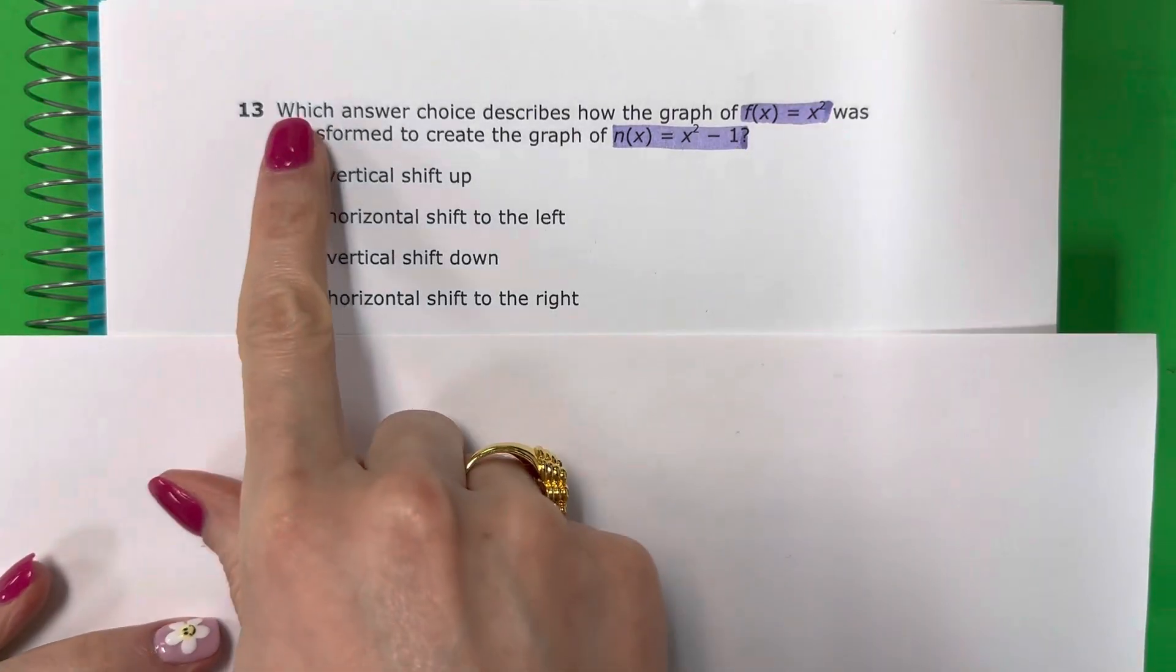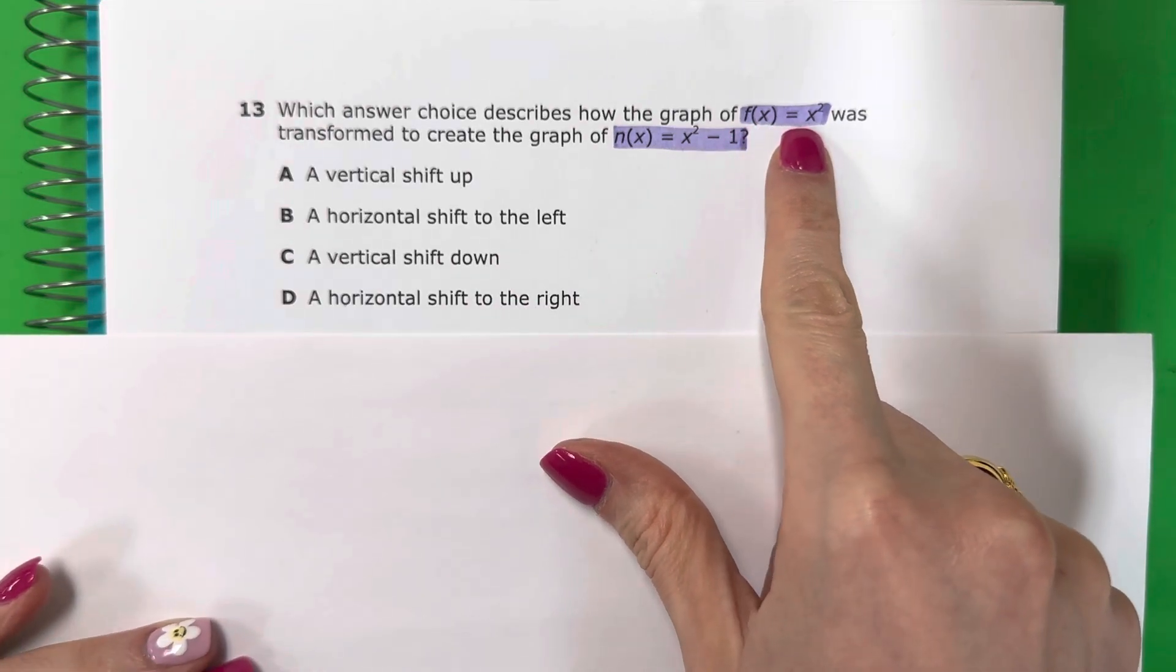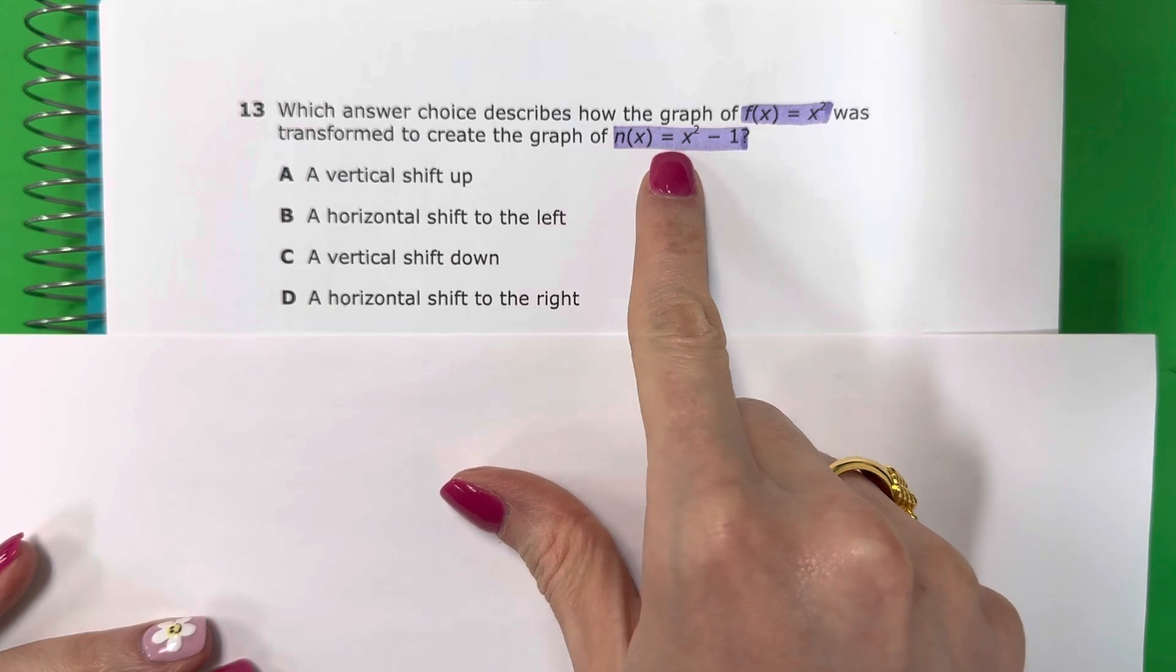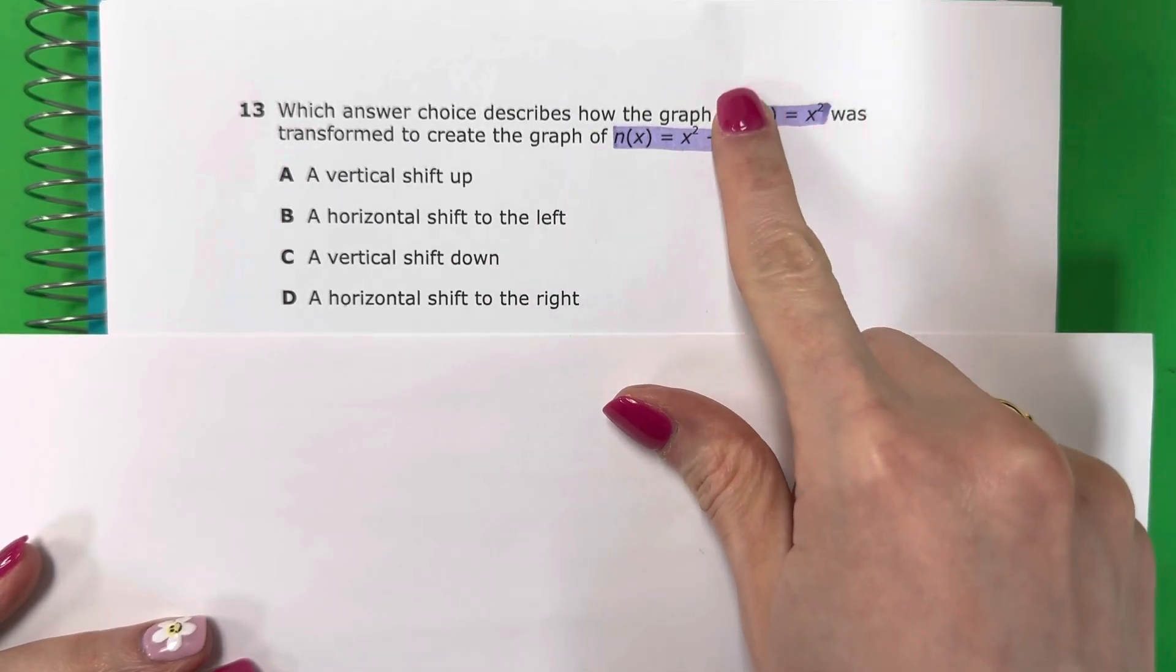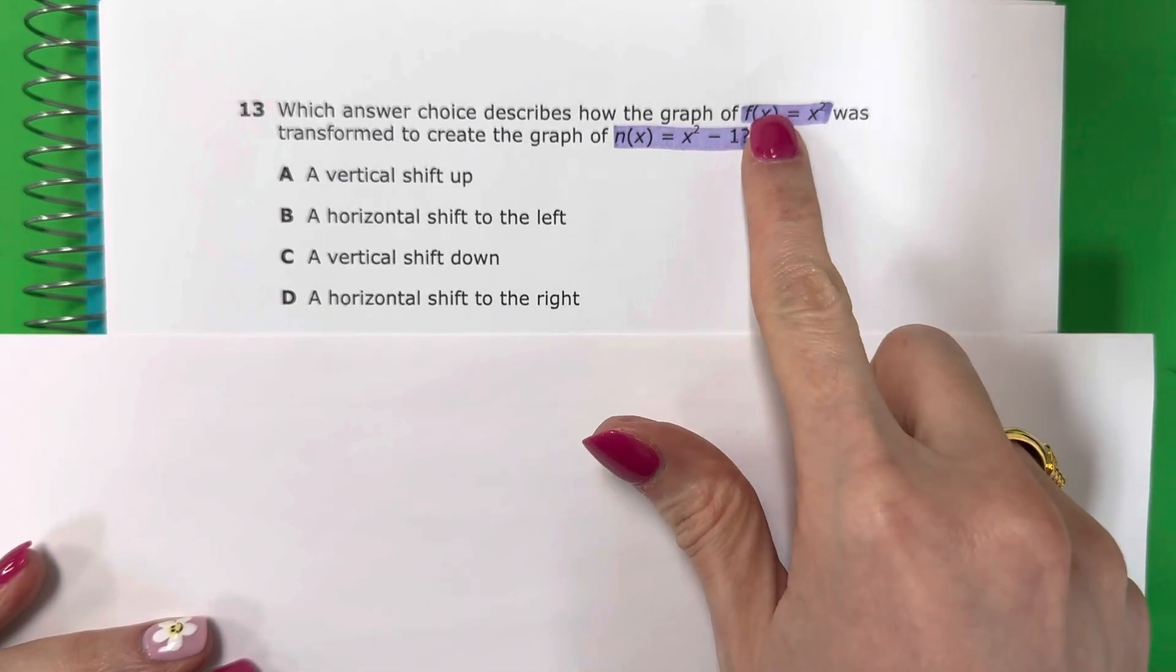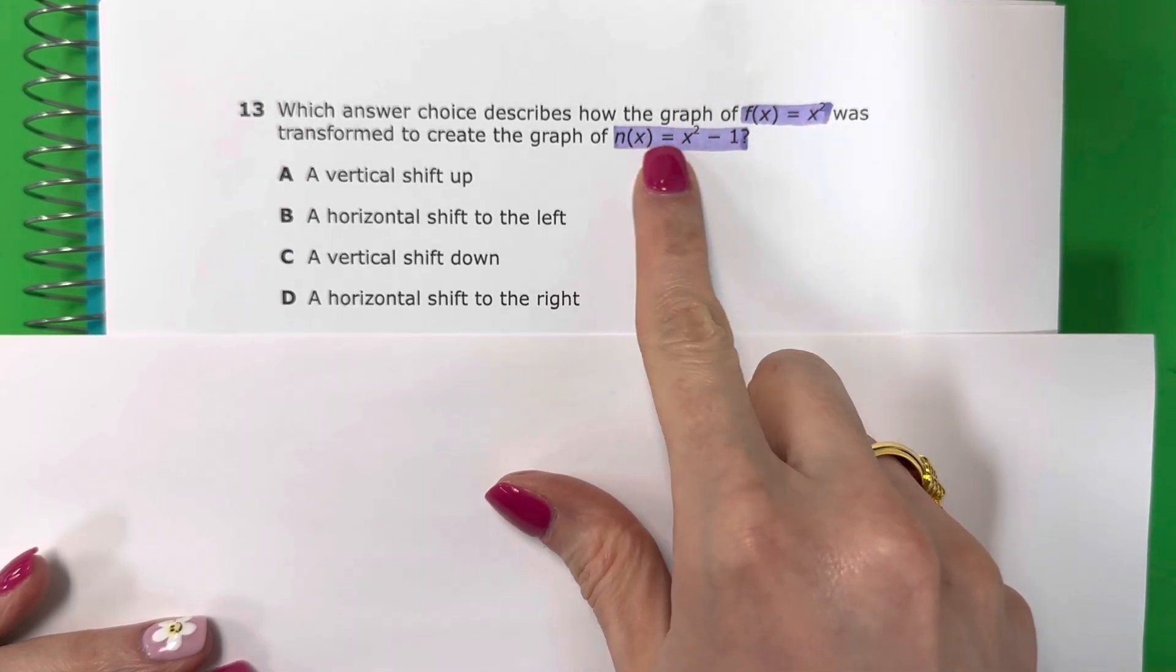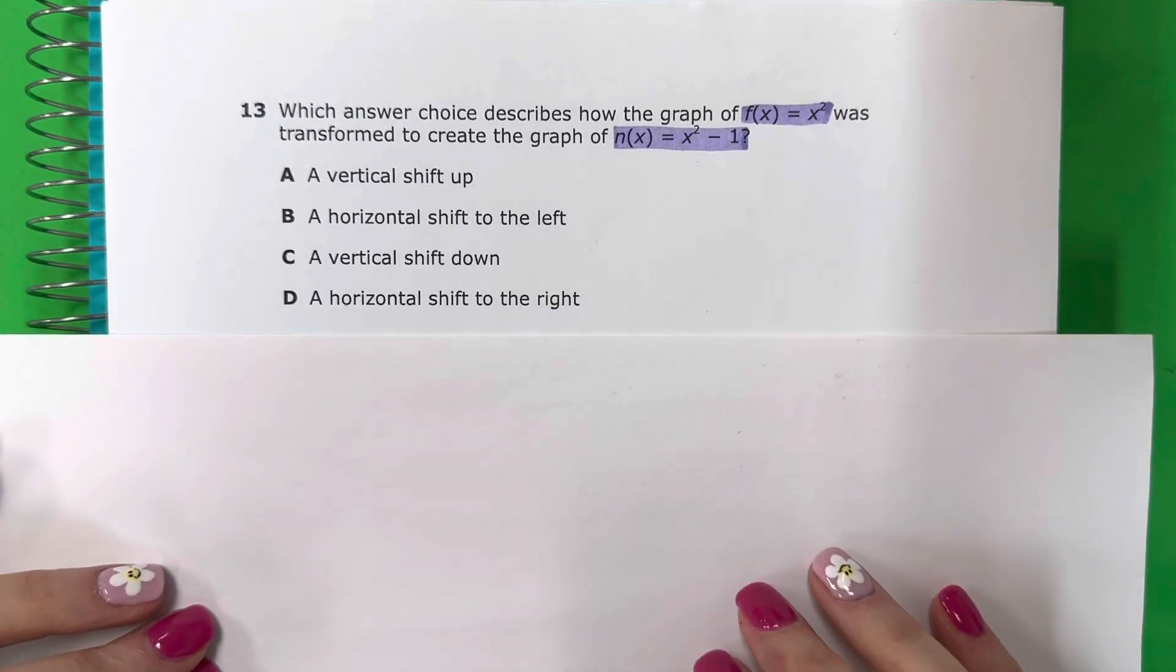Question 13. Which answer choice describes how the graph of f(x) = x² was transformed to create the graph of n(x) = x² - 1? Basically, this is my original graph and they changed it to this. Básicamente este es mi gráfica original y cambiamos a este. And we need to know what happened to the graph, y necesitamos saber qué pasa con la gráfica. How did it move? ¿Cómo se mueve?